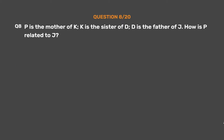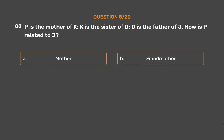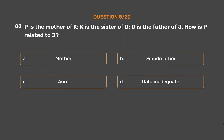Question number 8. P is the mother of K. K is the sister of D. D is the father of J. How is P related to J? Option A: Mother. Option B: Grandmother. Option C: Aunt. Option D: Data inadequate.